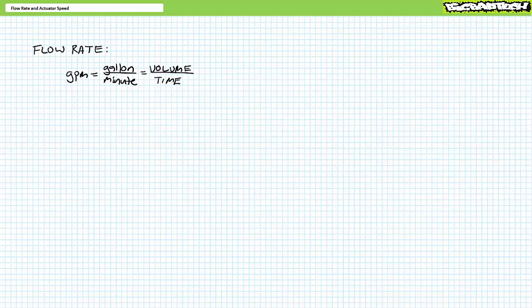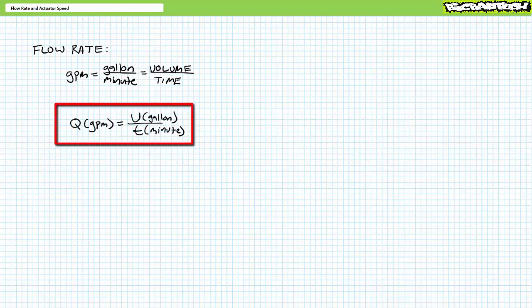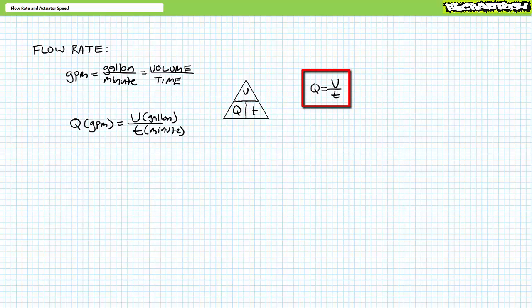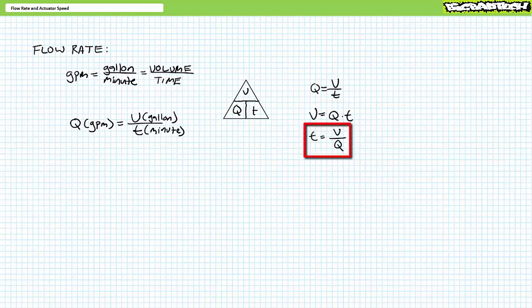This directly specifies how to calculate flow rate. Flow rate Q — don't ask me why it's Q — is volume in units of gallons divided by time in units of minutes: Q equals V over T. An extremely convenient way of graphically expressing this three-variable relationship is using a three-variable pyramid with volume at the apex and flow rate Q and time T side by side forming the base. To solve for Q, divide V by T. To solve for V, multiply Q by T. To solve for T, divide V by Q.